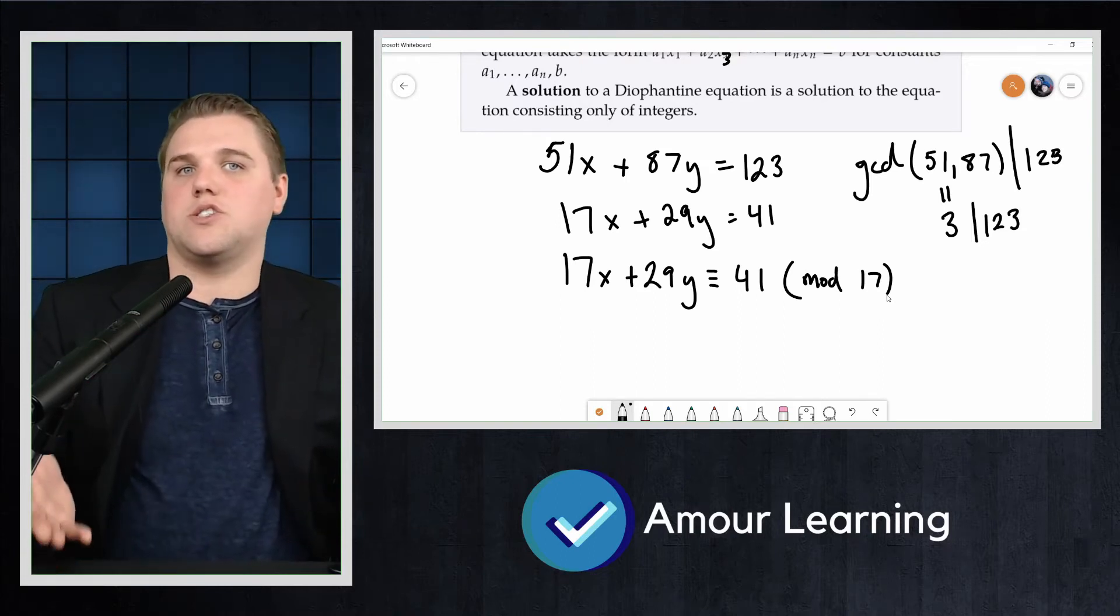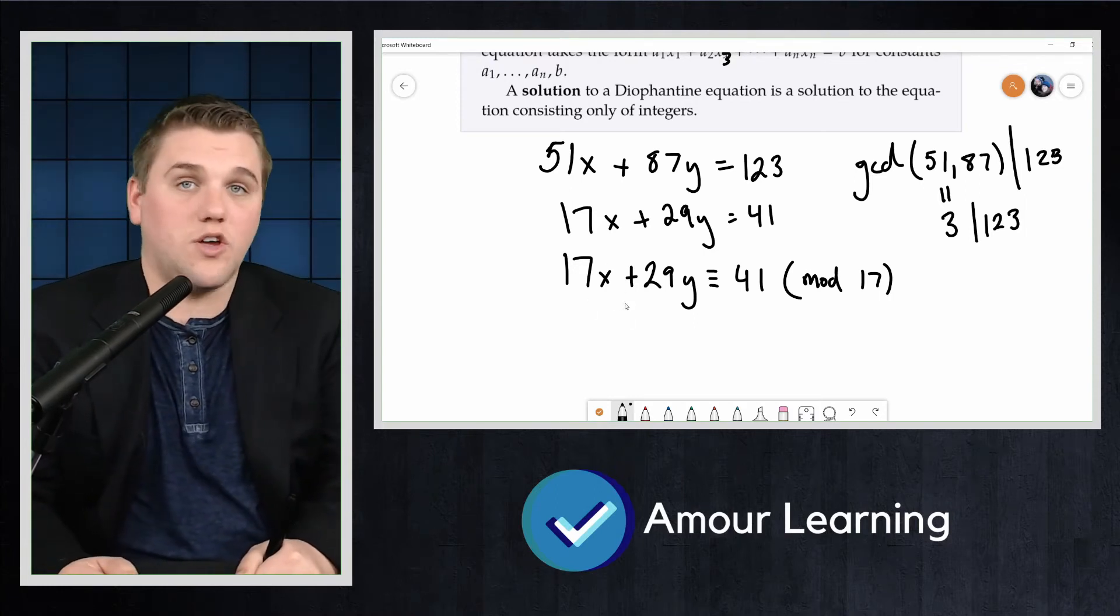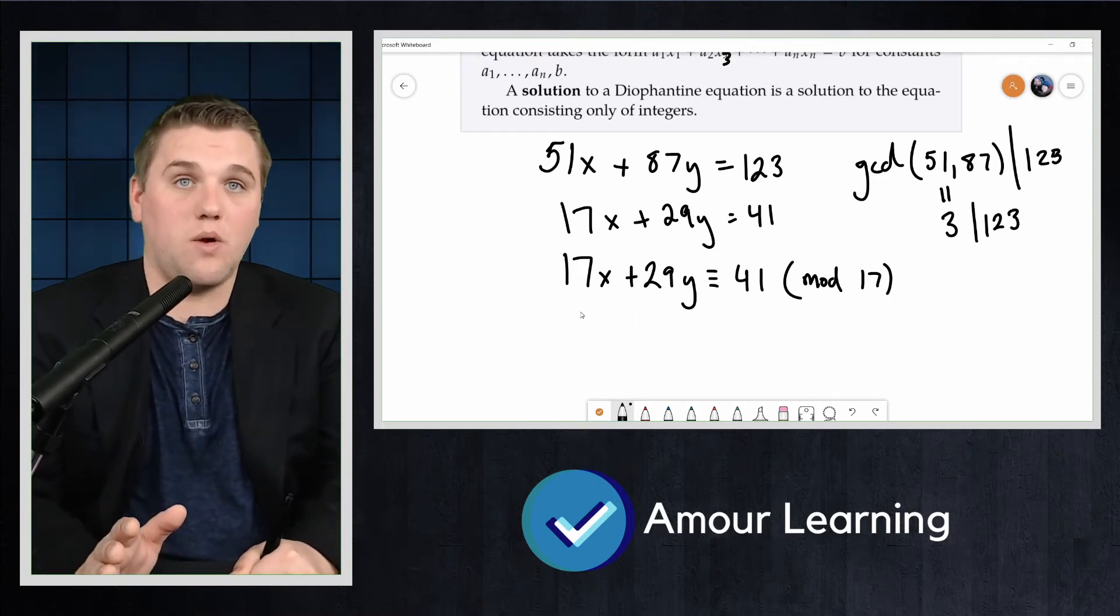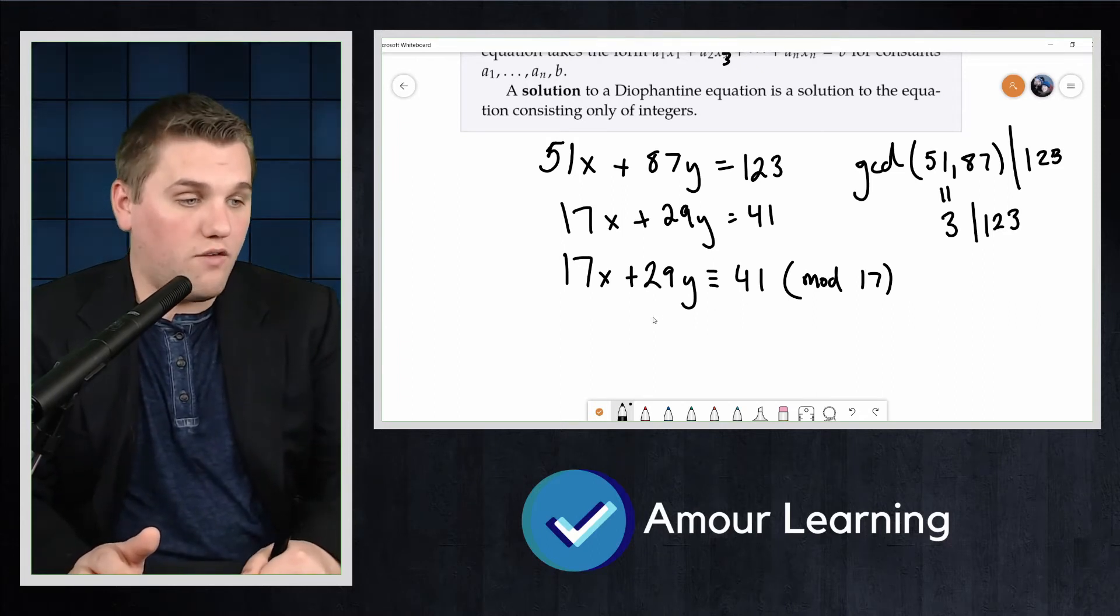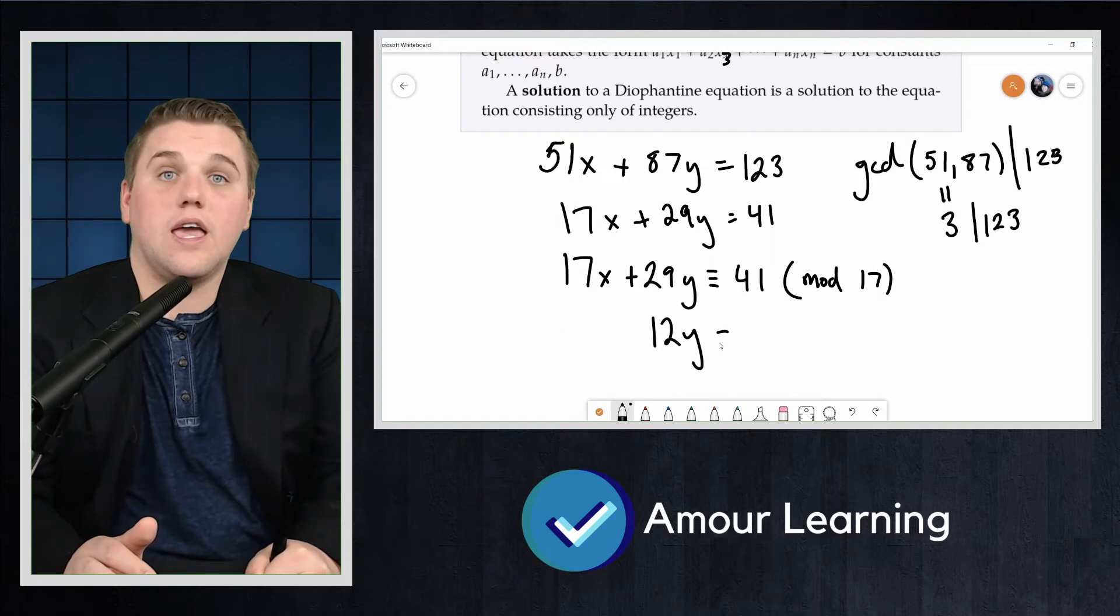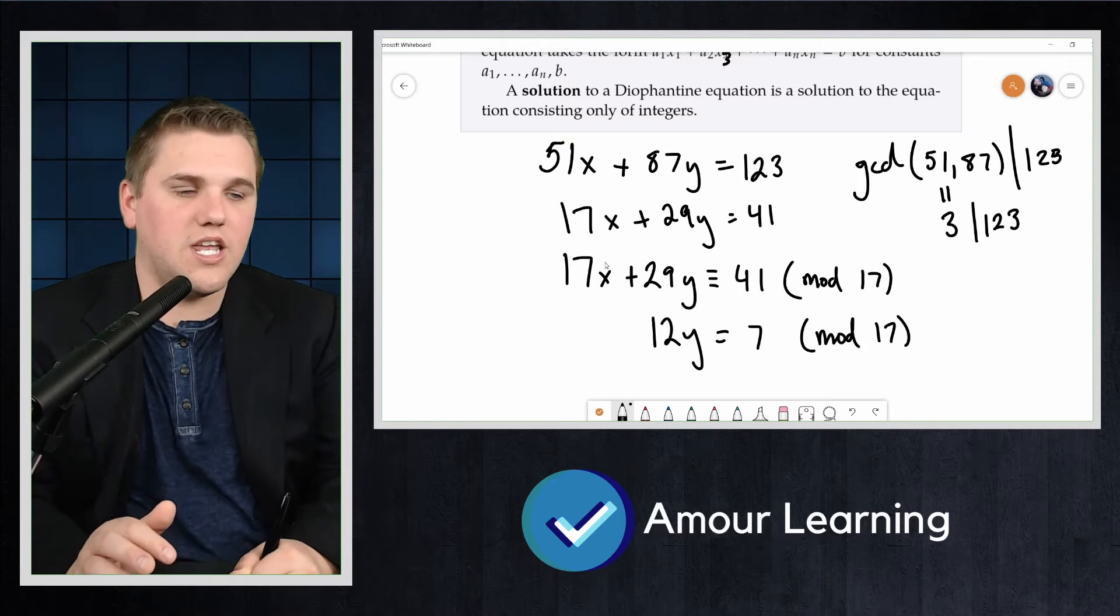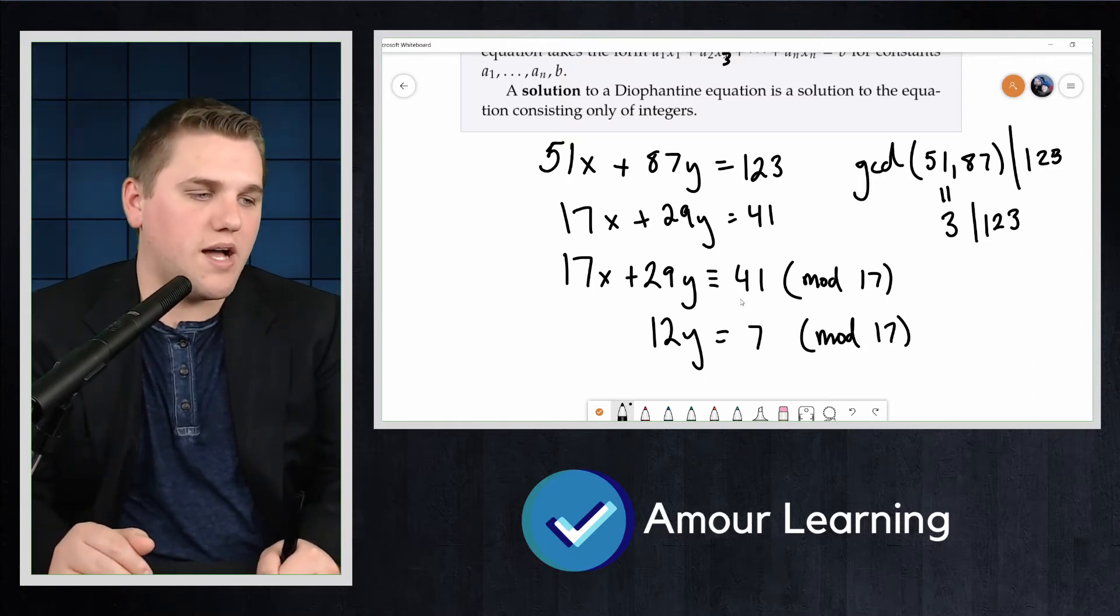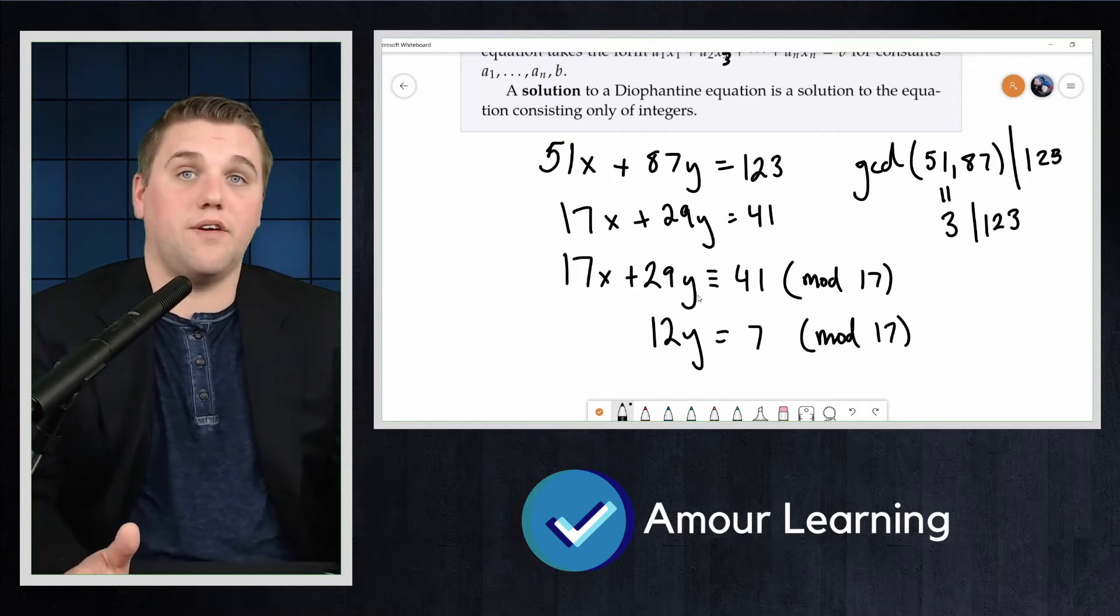In our case we reduce the congruence as follows here. So it would be 17x + 29y ≡ 41, which reduces to 12y ≡ 7 (mod 17). The 17 becomes a 0, 29 mod 17 is 12, and 41 mod 17 is 7.